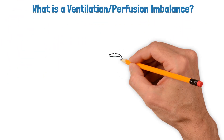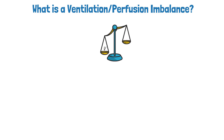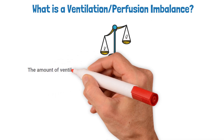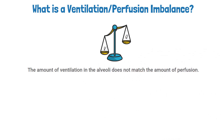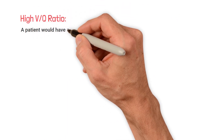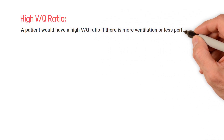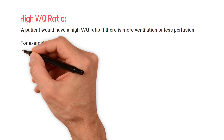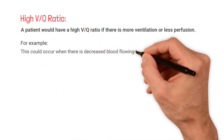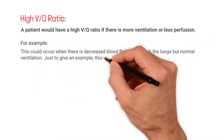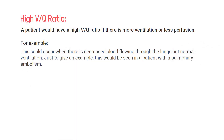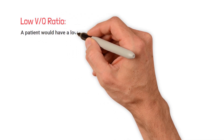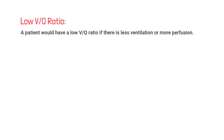A VQ imbalance simply means that the amount of ventilation in the alveoli does not match the amount of perfusion. There could either be a high or a low VQ ratio. A patient would have a high VQ ratio if there is more ventilation or less perfusion — for example, when there is decreased blood flowing through the lungs but normal ventilation, as seen in a patient with a pulmonary embolism. An area with ventilation but no perfusion is known as dead space.